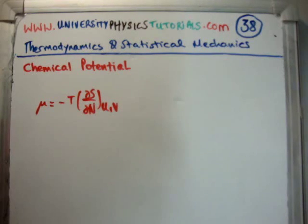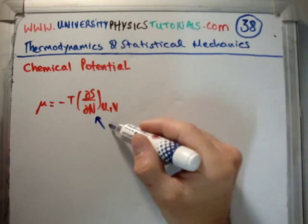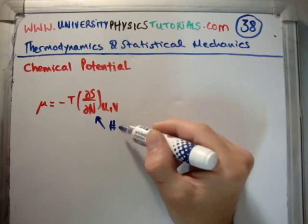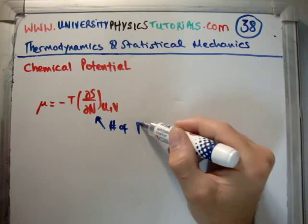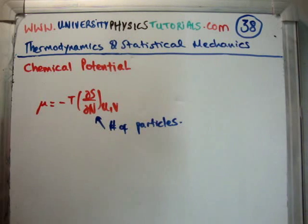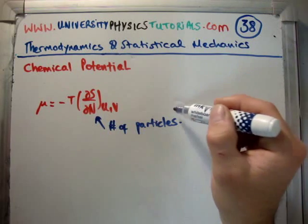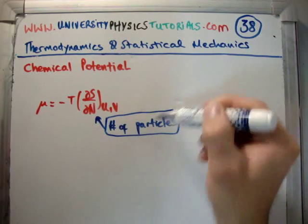Now, what does this mean? It means that the chemical potential is related to the number of particles, and that's the most important thing, is to relate to the number of particles. If you're often asking yourself what is the chemical potential, think about it: it's related to the number of particles.